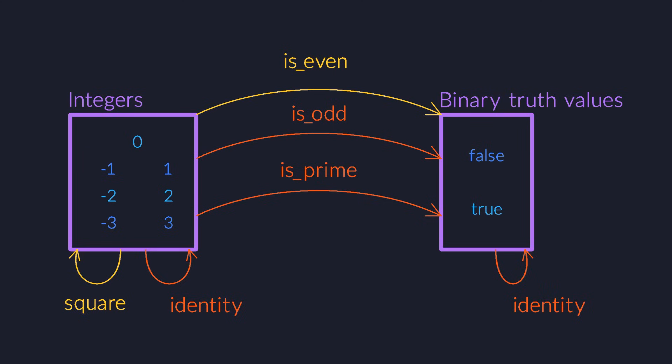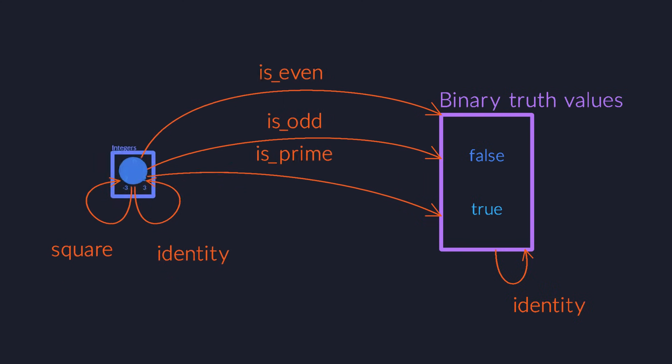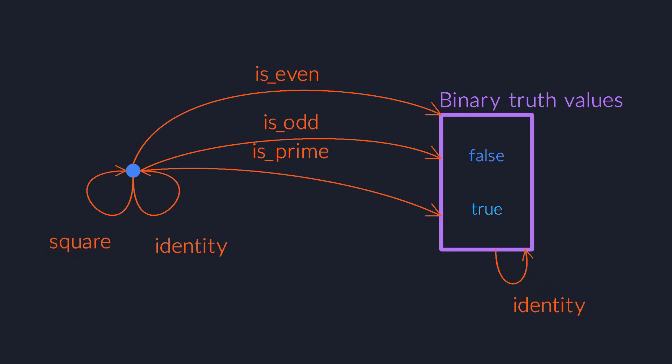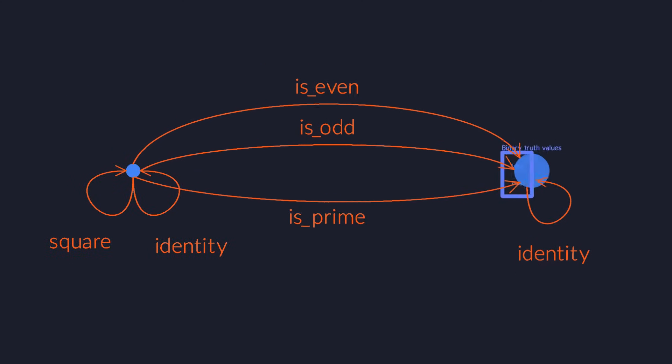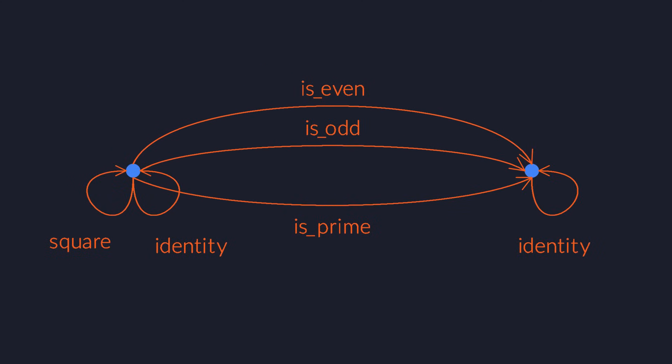Now the strange thing about category theory is that we don't want to look inside the sets. We zoom out until we no longer see their contents. Each set becomes a black box, an object without any internal structure.